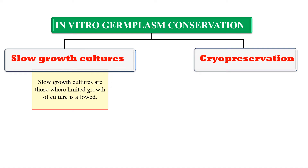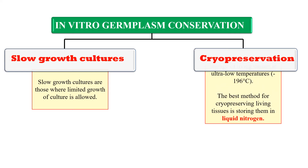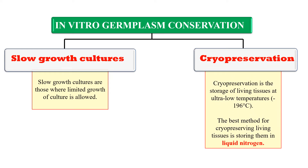For very long-term preservation, we go for another method of conservation — that is cryopreservation. In cryopreservation, we generally store the germplasm at very low, ultra-low temperature, that is minus 196 degrees. The best method for cryopreservation is to store the germplasm or living tissue in liquid nitrogen, which has a temperature of minus 196 degrees centigrade.